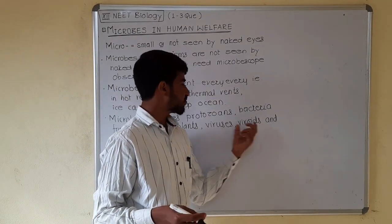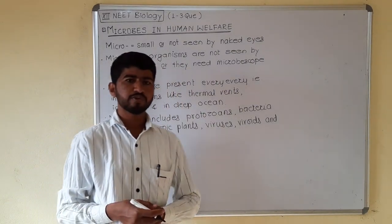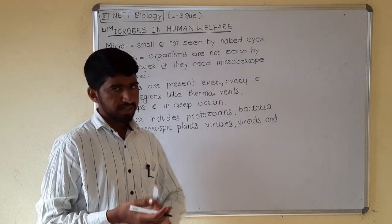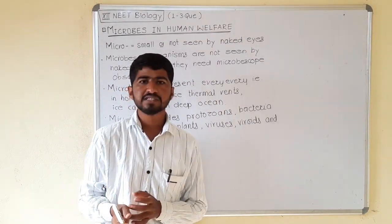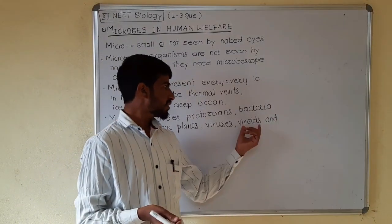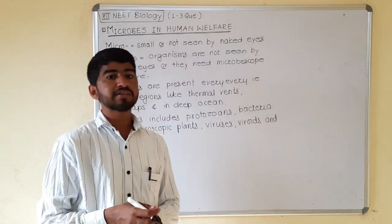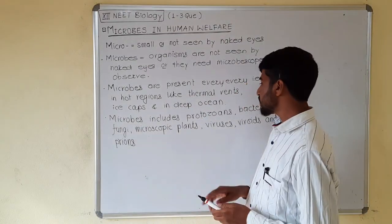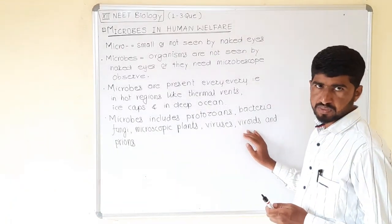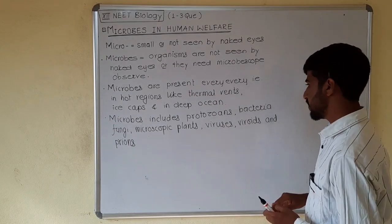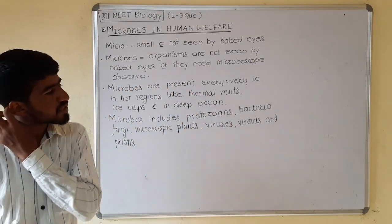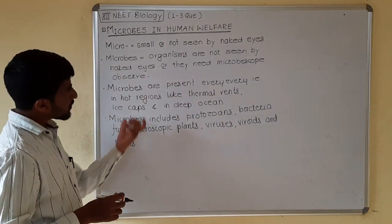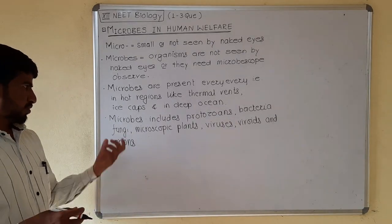Viruses are acellular obligate living organisms composed of protein and nucleic acid. The protein coat of viruses is called the capsid, which is non-infectious, while the genetic material of viruses is either DNA or RNA, not both. Viroids are small RNA molecules which are infectious in animals as well as plants, having low molecular weight but lacking a capsid like viruses. Prions are infectious proteins which cause neural diseases just like mad cow disease, kuru, etc. These are the different kinds of micro-organisms found in the universe.